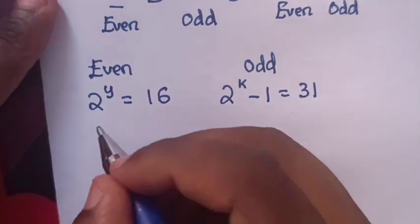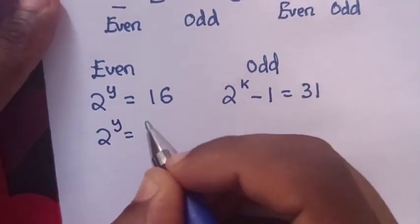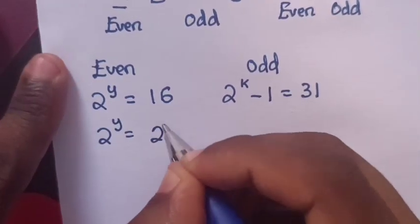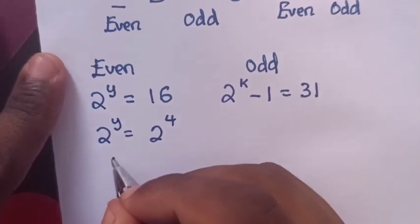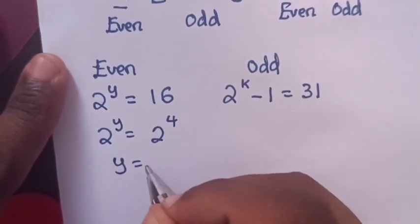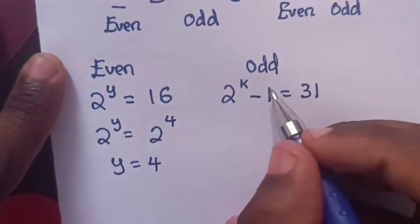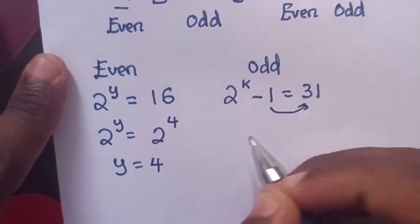Let's find the value of y. 2 power y equals 16, which is the same as 2 power 4. Same base, so we compare: y equals 4.